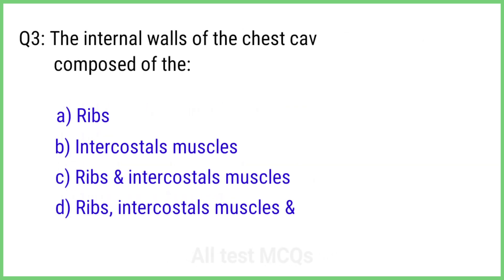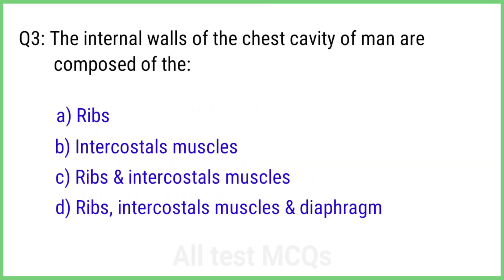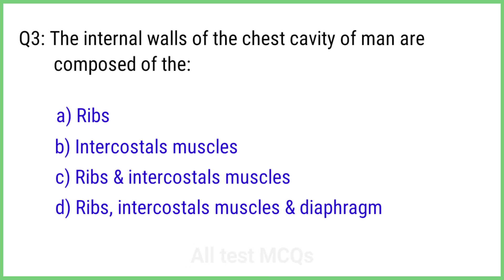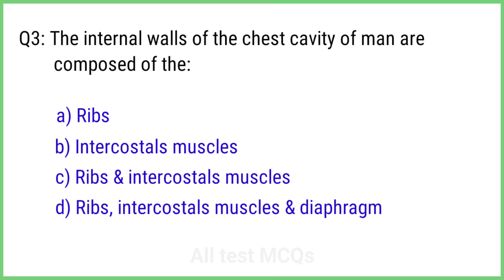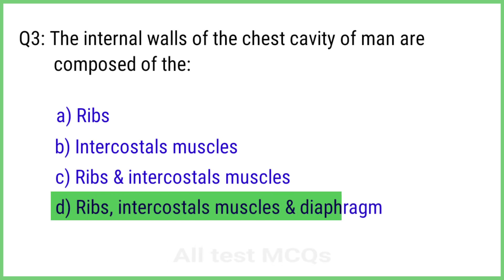Question 3. The internal walls of the chest cavity of men are composed of the... The right answer is option D: Ribs, intercostal muscles, and diaphragm.